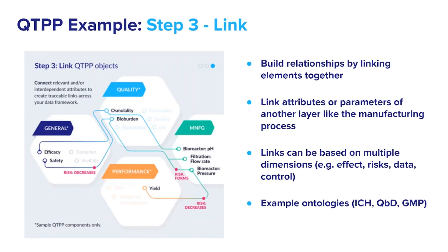In step three, we link these records to create relationships between records, which creates context and provides justification for decisions made throughout the development process. In this way, quality attributes can be linked to safety and efficacy. Process parameters and material attributes can be linked to quality attributes as prescribed by Section 2.3 of ICH Q8.